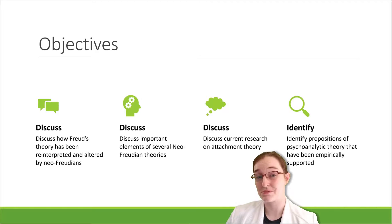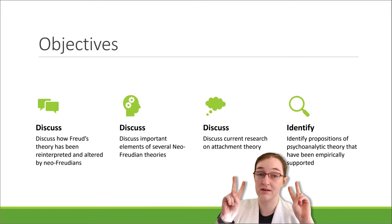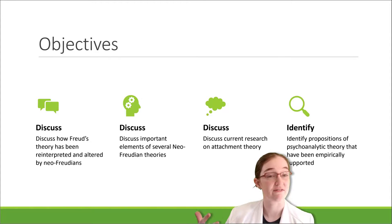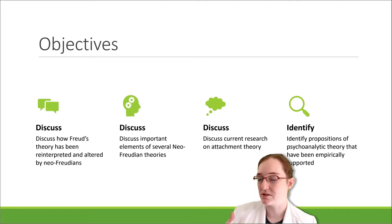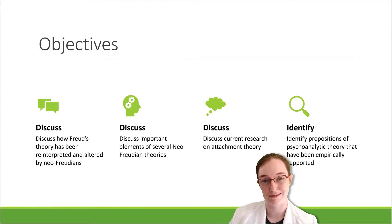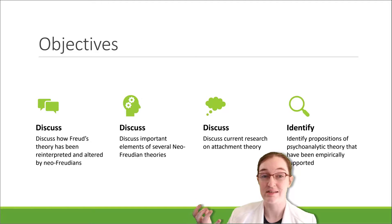In terms of objectives, we will discuss how Freud's theory has been reinterpreted and altered by the Neo-Freudians. We'll discuss some important elements of several Neo-Freudian theories — I have trimmed these down a little. There are some I don't cover here that I think are still important, so I encourage you to check them out in the book, like object relations theory. We'll also discuss current research on attachment theory.